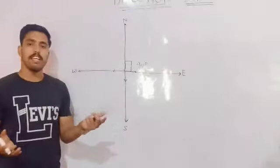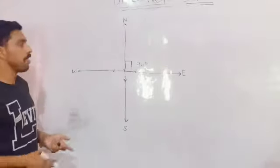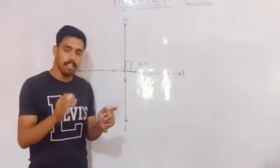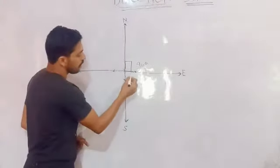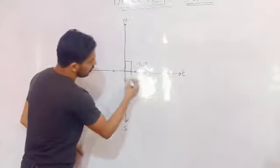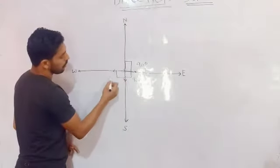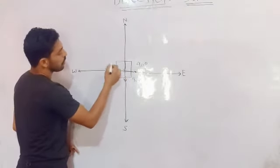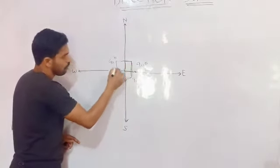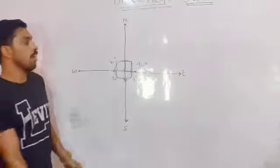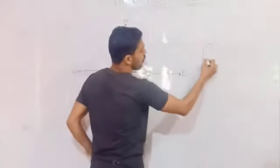Straight angle. So, this is 90 degree. This is 90 degree. This is 90 degree. And this is 90 degree. This is a full circle. How much is the full angle?